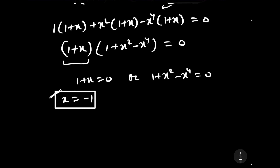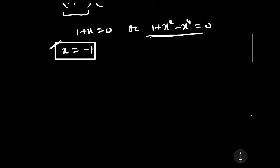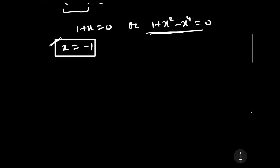To find the roots of the second equation 1 plus x squared minus x to the power 4 equals 0, we need to factorize it. We can follow two different methods. Let us start with Method 1.